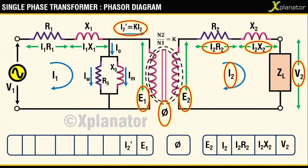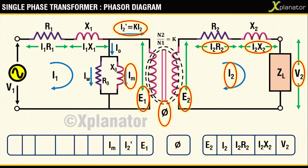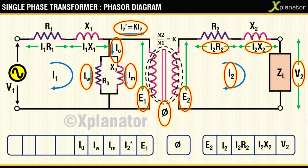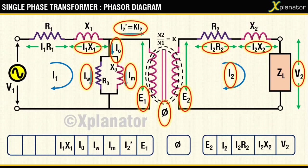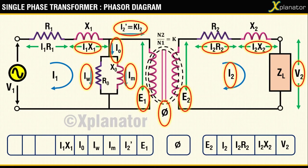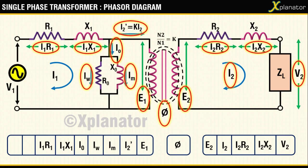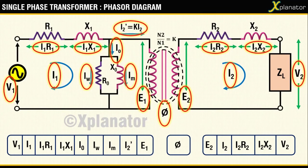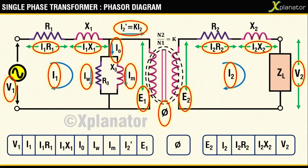I1X1, the drop due to magnetic leakage flux in the primary circuit; I1R1, the drop due to the winding resistance in the primary circuit; I1, the primary current; and last, V1, which is the input source voltage. So on the whole, you have a total of 15 terms which are to be drawn on this single phasor diagram.